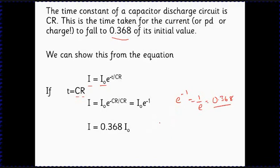Let's suppose for example I had a 2 millifarad capacitor and I discharged it through a 10 kilo ohm resistor. I'd have 2 times 10 to the minus 3 times 10 times 10 to the 3, 20 seconds. So I would know that after 20 seconds the voltage would be 0.368 of the initial voltage.